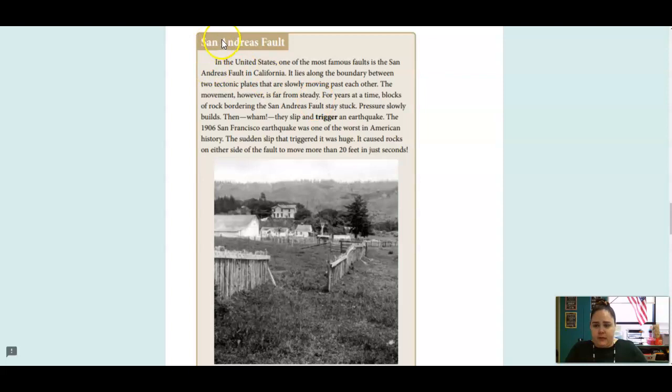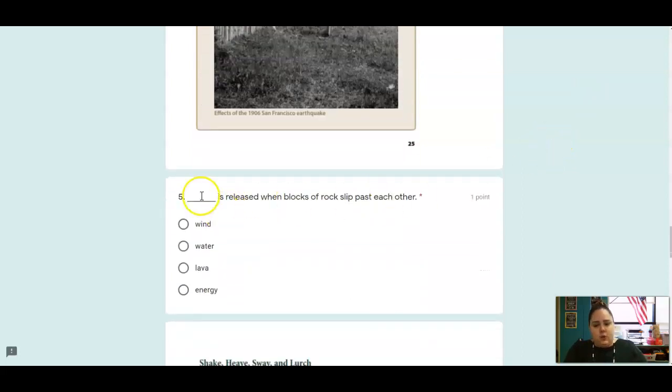The next question we're going to read about the San Andreas fault. In the United States, one of the most famous faults is the San Andreas fault in California. For years at a time, blocks of rock bordering the San Andreas fault would stay stuck. Pressure slowly builds and then wham, they slip and trigger an earthquake. The 1906 San Francisco earthquake was one of the worst in American history. It caused rocks on either side of the fault to move more than 20 feet in just seconds. What is released when blocks of rock slip past each other?